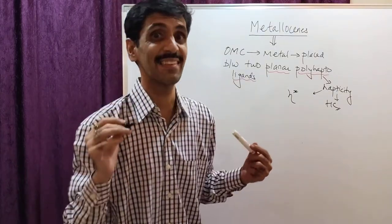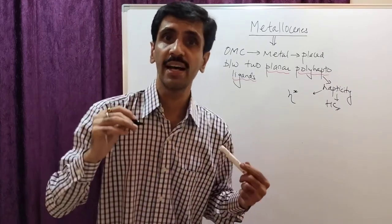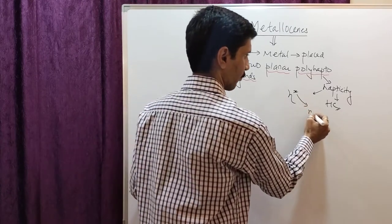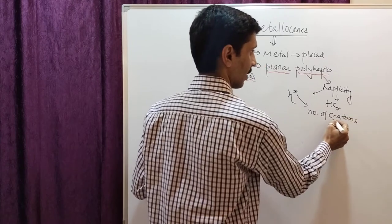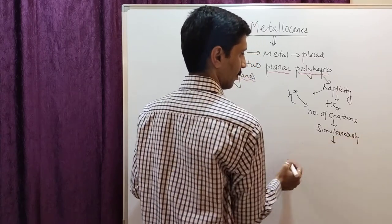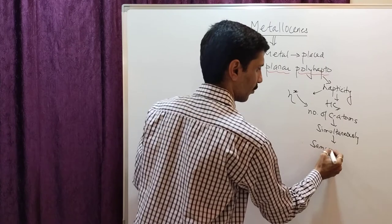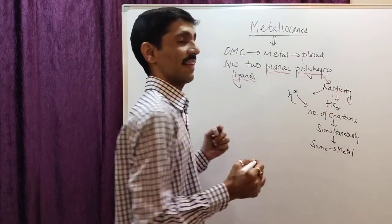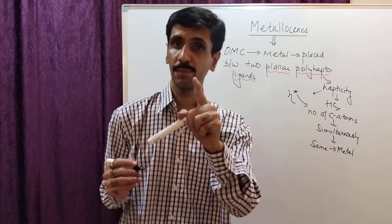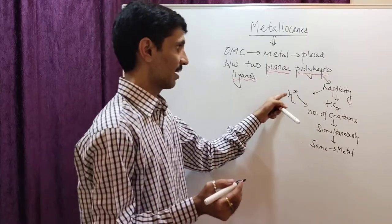It is denoted as η (eta) raised to x. The x stands for the number of carbon atoms which are simultaneously attached to the same metal — simultaneously meaning at exactly the same time, not one at a time. And since every carbon atom donates one electron, whatever is the number of carbon atoms, that many electrons are donated.